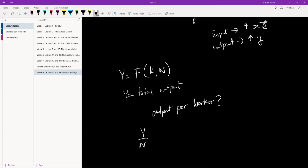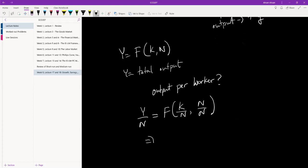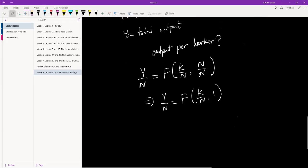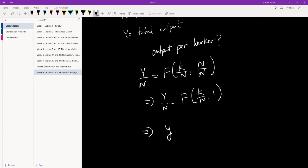So this simplifies, or what I can do is simplify this further and just write y, a small y, is equal to function of k, where we know that y is output per worker.